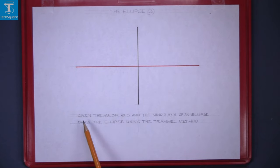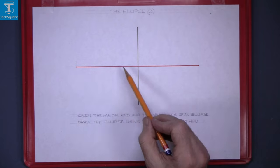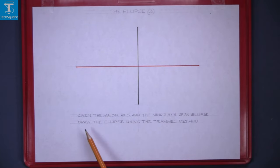The ellipse 3. Given the major axis and the minor axis of an ellipse, draw the ellipse using a trammel method.